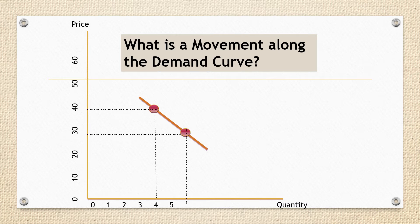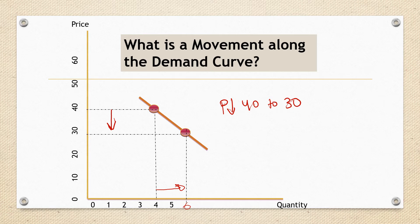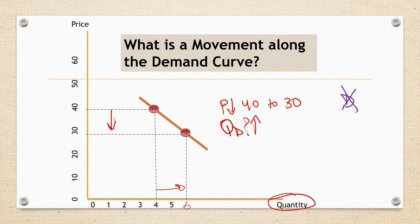So what is the movement along the curve? If my prices decreased from 40 to 30, look what happened to my quantity — it increased from 4 to 6. As prices decreased from 40 to 30, my quantity demanded increased. Make sure you say 'quantity demanded' and not 'demand' only — this is very important. Since my quantity is increasing, I call that an extension.